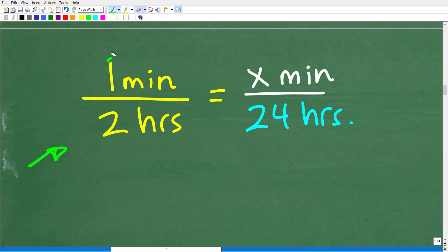Now, a proportion is what we call, which is by definition, two equal fractions. Here, let's get rid of the units of measure. We have one half. Now, if the clock loses one minute for every two hours, what we want to determine is how many minutes is it going to lose every 24 hours. Now, this is a proportion, and I'm going to explain what a proportion is in just one second.